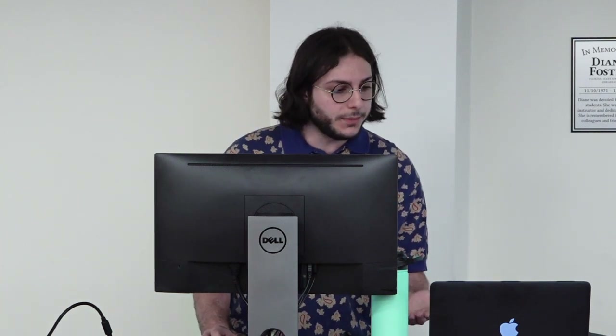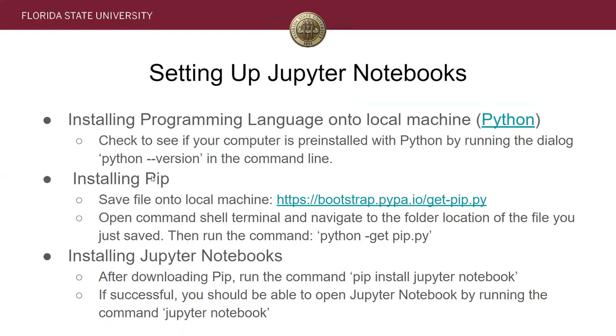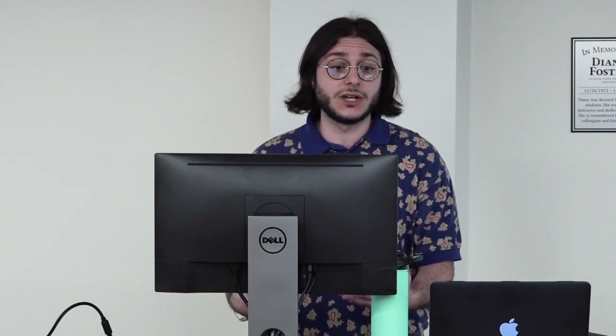Following that, you would install PIP, which is a package management system written in Python used to install and manage different software packages. The Python Software Foundation recommends using PIP for installing Python applications and their dependencies during deployment. All you need to do is follow the link, save the file, open a command shell terminal, navigate to the folder where the file is saved, and run the command listed. Then you'll follow it by running another PIP command to install Jupyter Notebooks, and you'll be able to run Jupyter Notebooks on your local machine without internet.